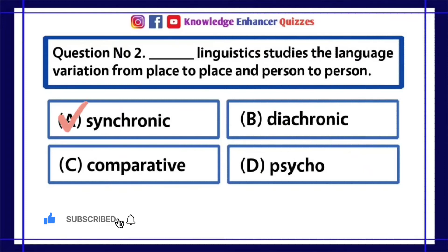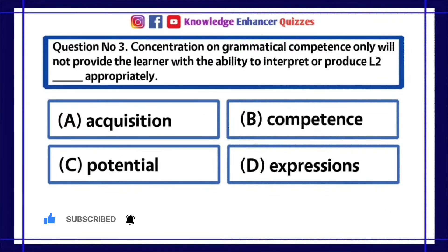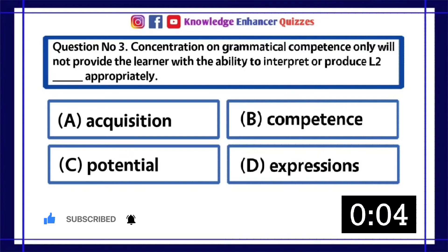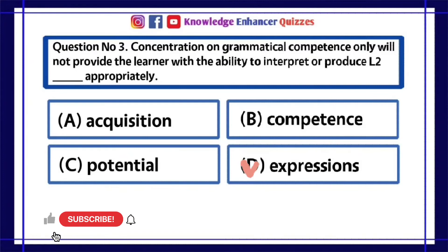Option A is the right answer. Question Number 3: Concentration on grammatical competence only will not provide the learner with the ability to interpret or produce L2 dash appropriately. A. Acquisition, B. Competence, C. Potential, D. Expressions. Option D is the right answer.